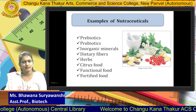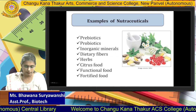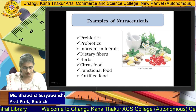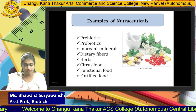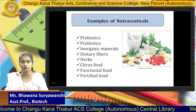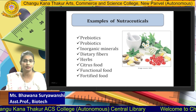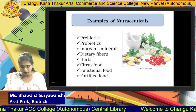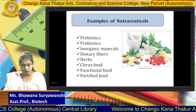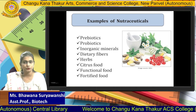What are the examples of nutraceuticals? The examples of nutraceuticals are prebiotics, probiotics, inorganic minerals, dietary fibers, herbs, citrus foods, functional foods, and fortified foods — all these come under the category of nutraceuticals. As you can see in the picture towards your right, all these are nothing but your nutraceuticals.